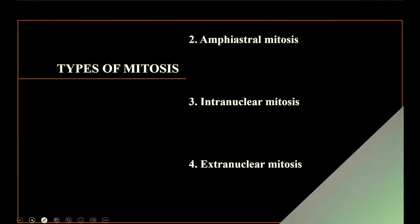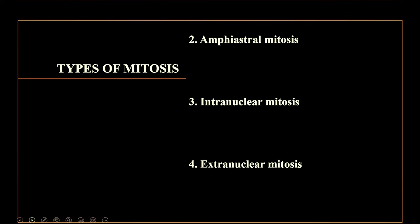The next type of mitosis is ampiastral mitosis. 'Ampi' means both, so asters are going to form on both sides, meaning at both poles. It is found in animals, and the spindle fiber forms two asters, one at each pole.